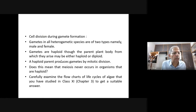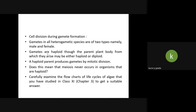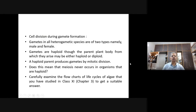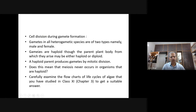Now let us study what type of cell division occurs during gamete formation. Both mitotic and meiotic type of cell division occur during gamete formation. Gametes in all heterogametic species are of two types — male and female — also called male and female sex cells. Gametes are haploid, though the parent plant body from which they arise may be either haploid or diploid. The haploid parent produces gametes by mitotic division — and this is characteristic of plants only.